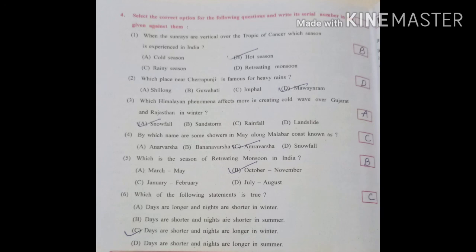Now MCQs. When the sun rays are vertical over the Tropic of Cancer, which season is experienced in India? Hot season, summer season, answer is B. Which place near Cherrapunji is famous for heavy rains? Mawsynram, answer is D. Which Himalayan phenomenon affects more in creating cold wave over Gujarat and Rajasthan in winter? Answer is A, snowfall. By which name are showers in May along the Malabar coast known? C, Amravarshas. Which is the season of retreating monsoon in India? B, October to November. Which statement is true? Days are shorter and nights are longer in winter.